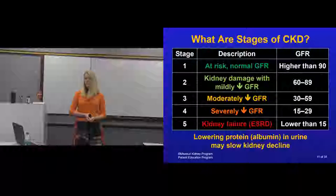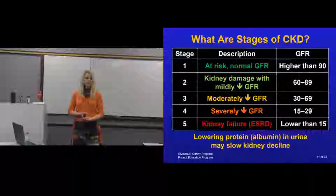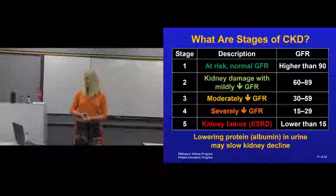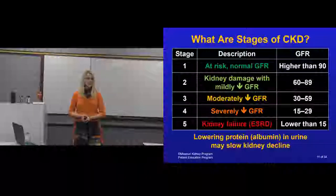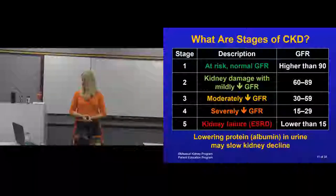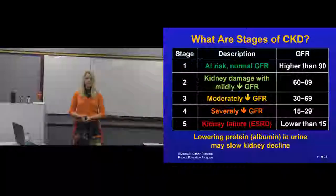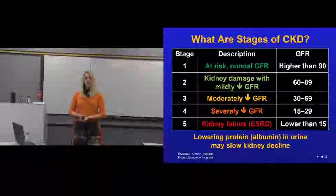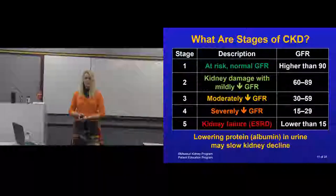Stage four is severe kidney damage, with a GFR of 15 to 29. During this stage we may see you more frequently, and we'll prepare you for either a kidney transplant, dialysis, or conservative management with a lot of education on your options. Stage five is kidney failure, or end-stage renal disease, with a GFR less than 15. At this point we hope a dialysis access is in place if you choose dialysis, or you've met with the kidney transplant team. Lowering the amount of protein you spill in your urine can slow the progression of kidney disease, and we'll talk about methods to achieve that.